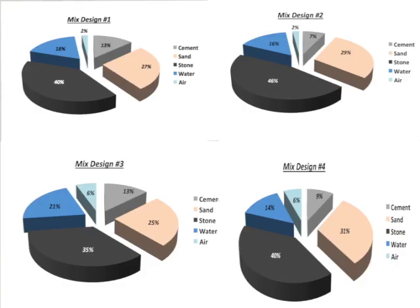Let's now take a look at some typical concrete proportions. Here we have four mixes. Mixes one and two have entrapped air, while mixes three and four have entrained air — we'll talk about what those are in a minute. Mixes one and three would be considered rich mixes due to the heavy cement content, while mixes two and four would be considered lean mixes because of the lower cement content.